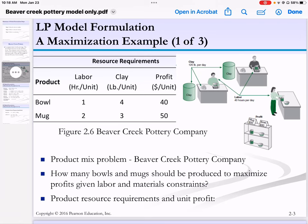This is called a product mix. How many bowls and mugs should be made to maximize profit, given our constraints?